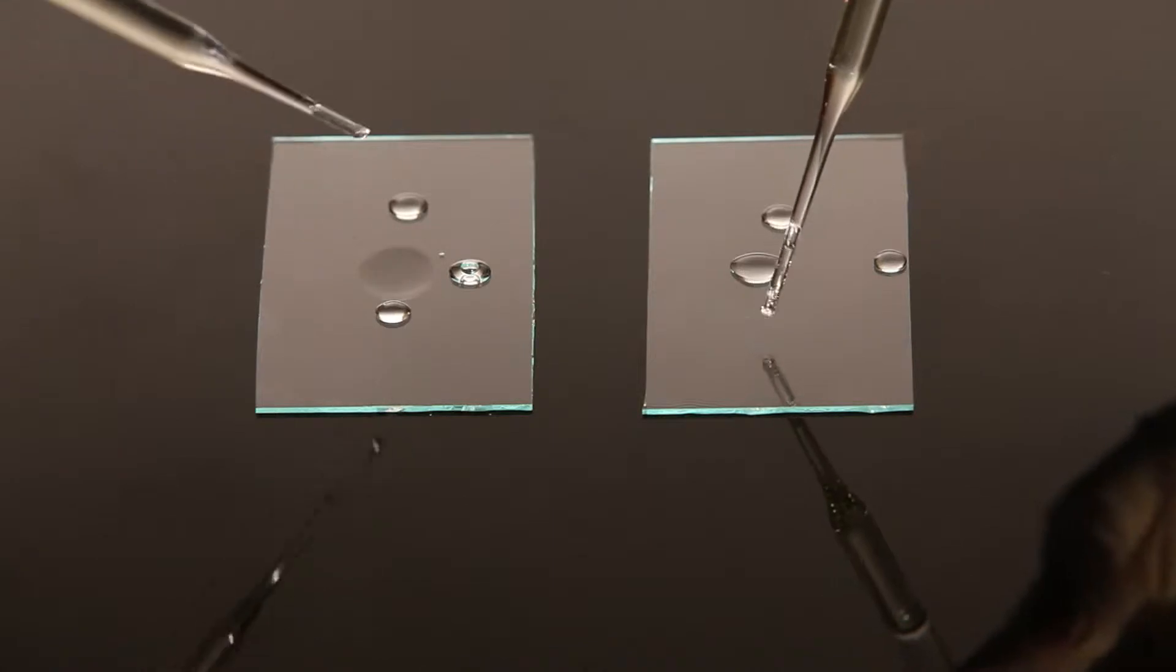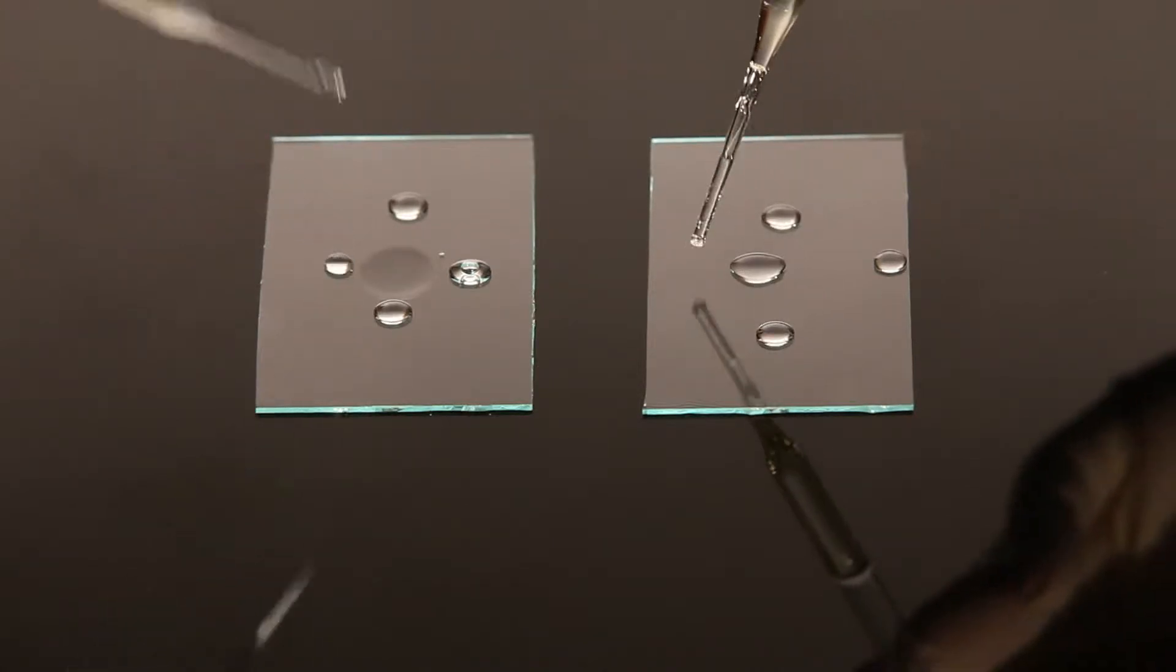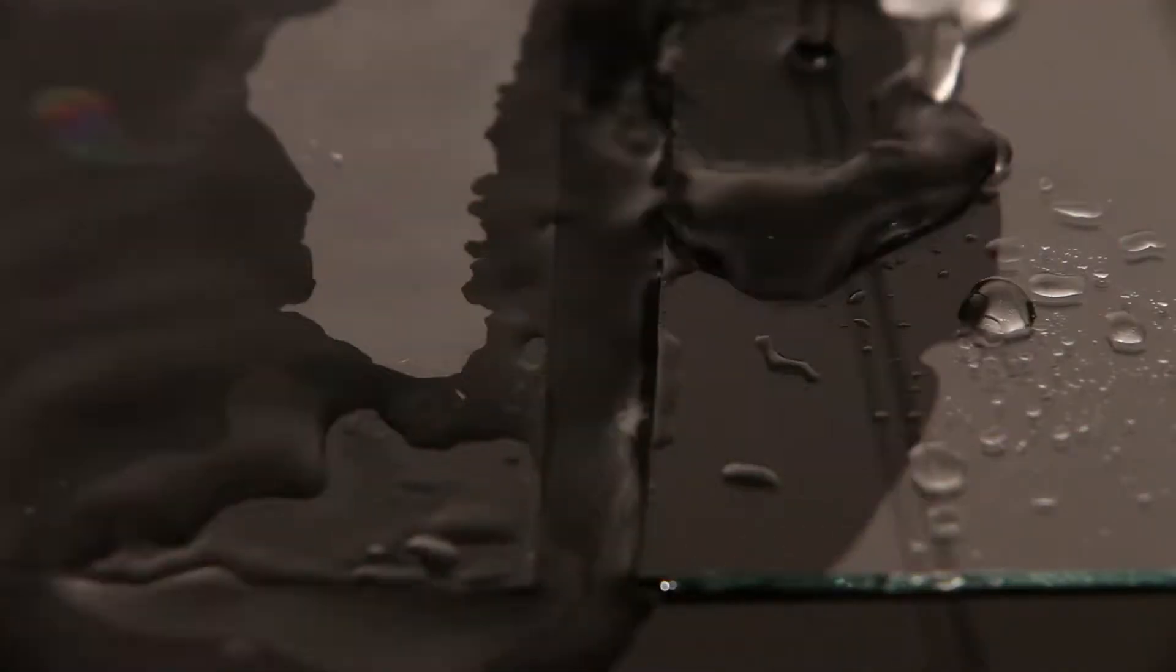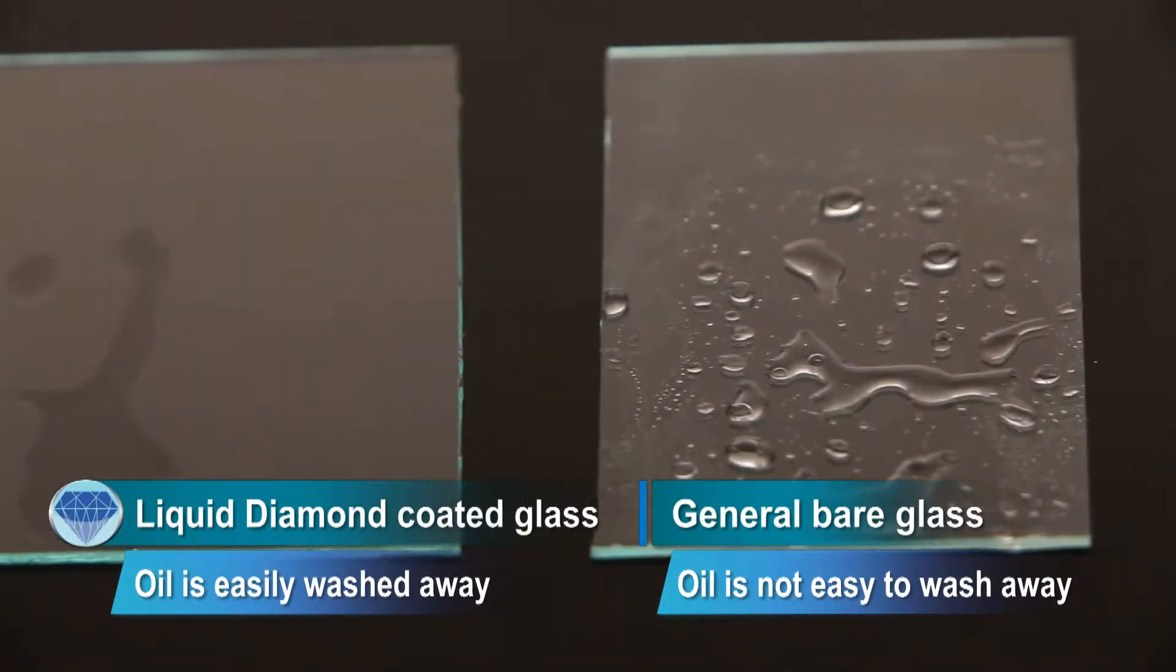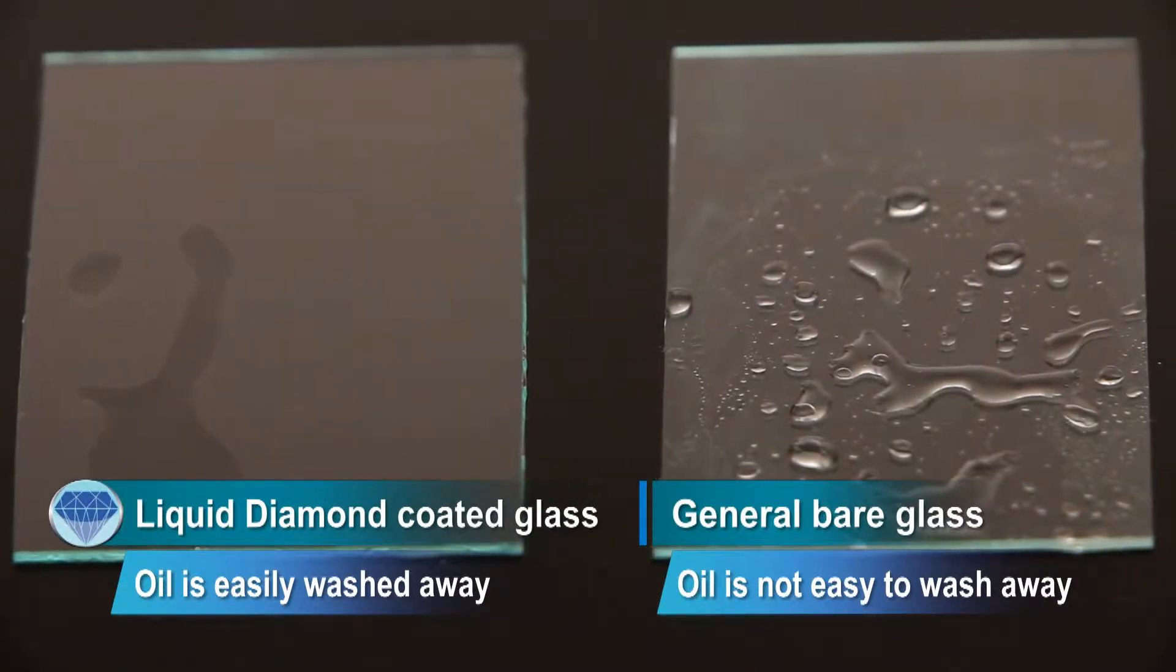Then put a few drops of oil onto both glass plates and wash with water. The oil on the high contact angle general glass plate isn't easily washed away, but the oil on the low contact angle Liquid Diamond coated glass plate is easily washed away.